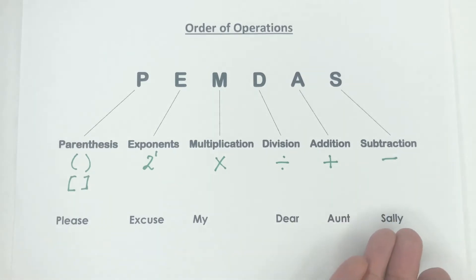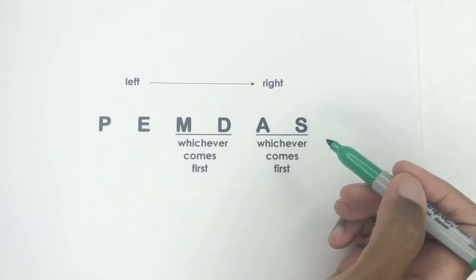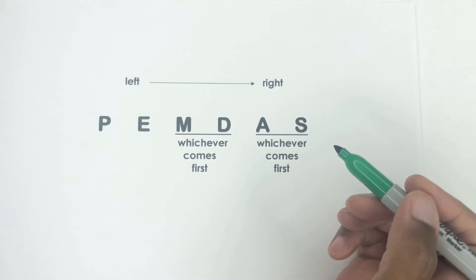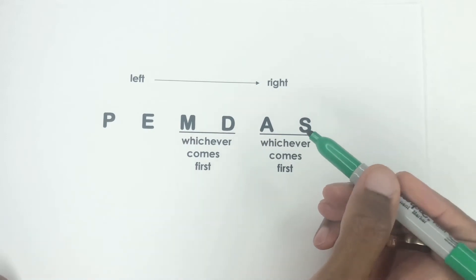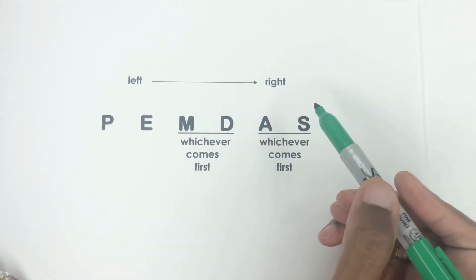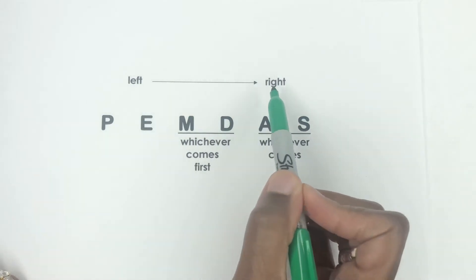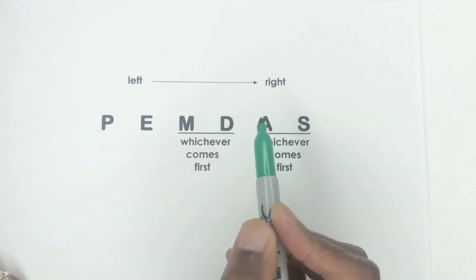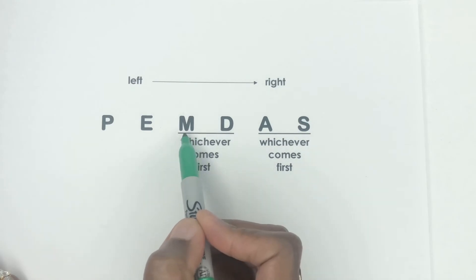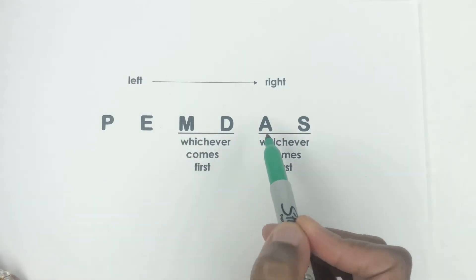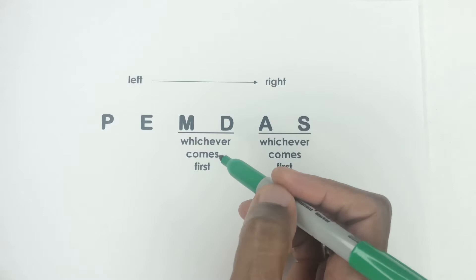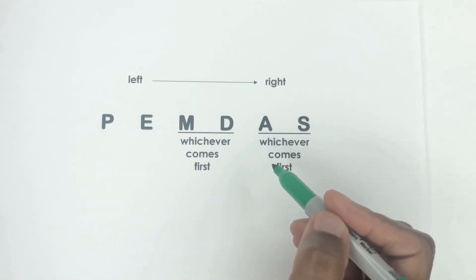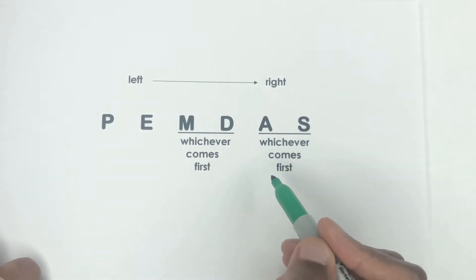The acronym Please Excuse My Dear Aunt Sally doesn't help the students because when I'm teaching it, I always have to say to my students that you have to go from left to right. That's the first part. And then it's whichever comes first—multiplication and division, whichever comes first; addition or subtraction, whichever comes first. So if you keep that in mind, then all these other major viral math problems that we had in the past wouldn't have been such a huge debate.